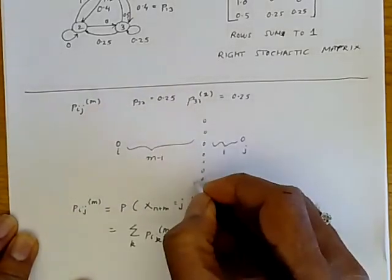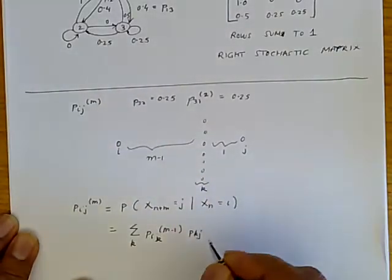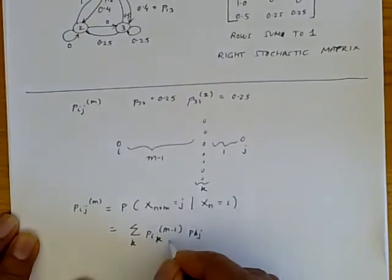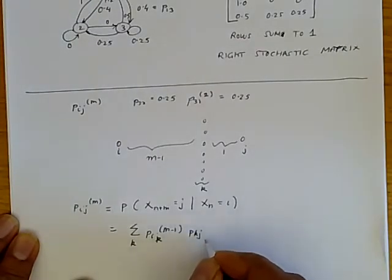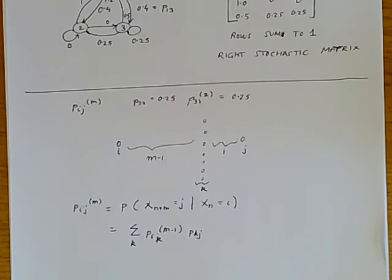So what we're saying is, here are all the different values of k. We want to go from i to k in m minus one steps, and then we'll go from k to j in one step. This is one way of thinking about it.